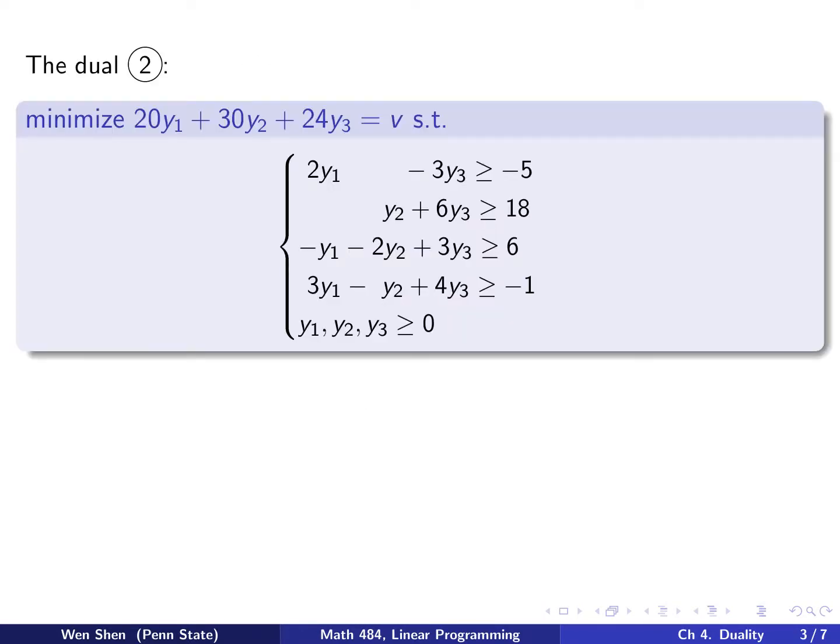Let's form the dual problem and check on that. Problem 1 is a max problem, then we follow the definition and form the dual problem, which we call problem 2, a min problem. You take the right-hand side to form the objective function, give three variables—one for each constraint—then you transpose the A matrix and put the objective coefficients on the right-hand side, and you switch the inequality sign.